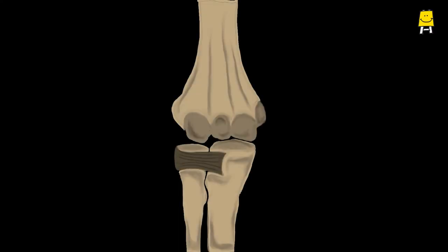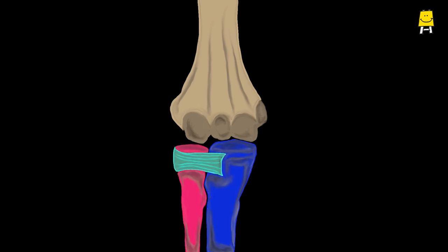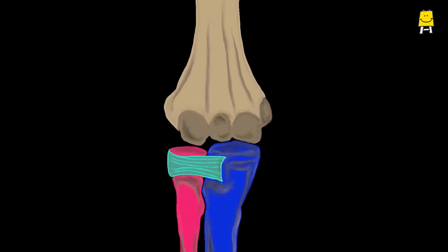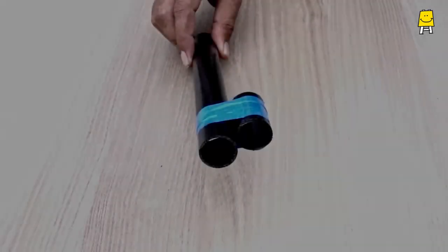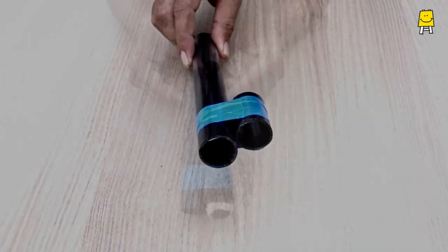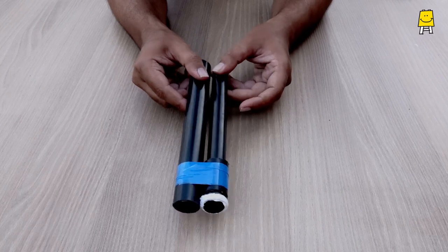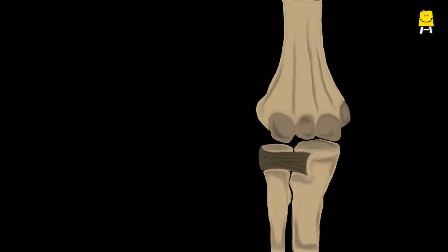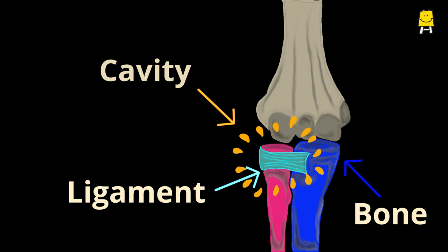There is another joint present at the elbow which allows this rotation. It is the pivot joint. A pivot is a fixed point on which another structure rotates. A pivot joint is formed when a bone rotates in the cavity formed by other bones or ligaments.